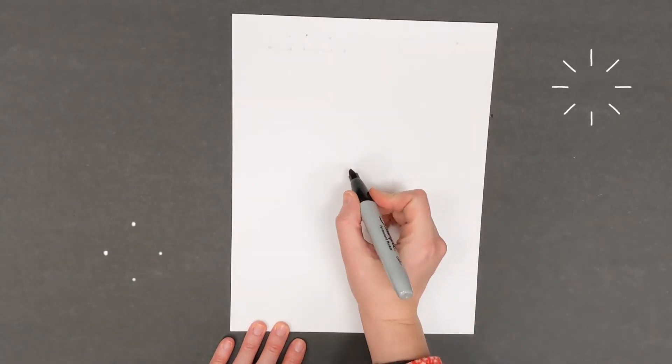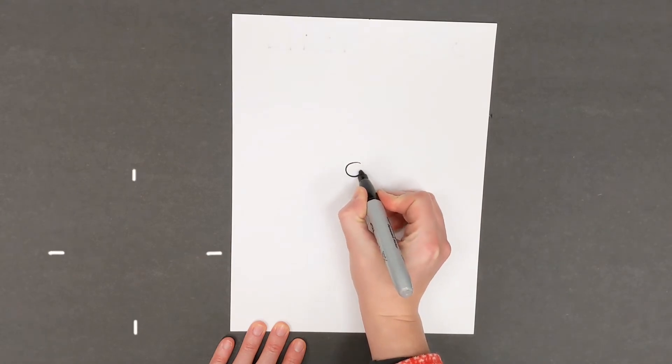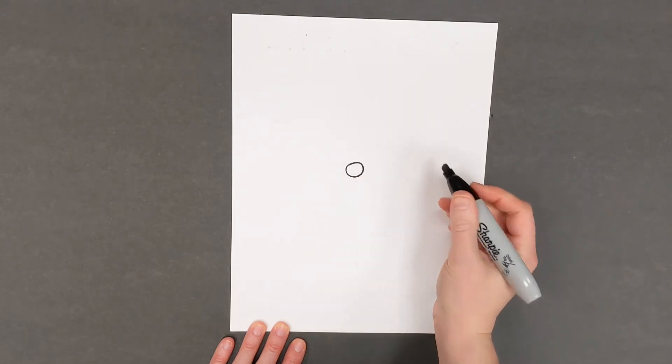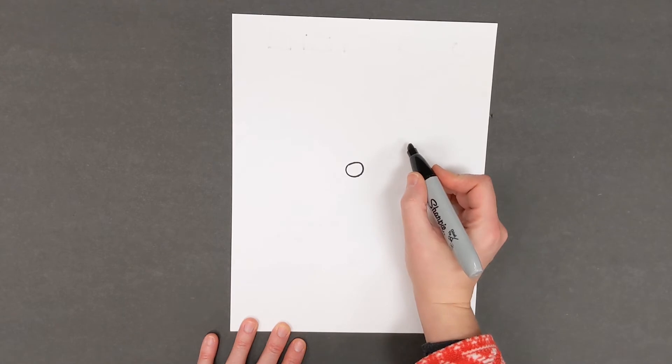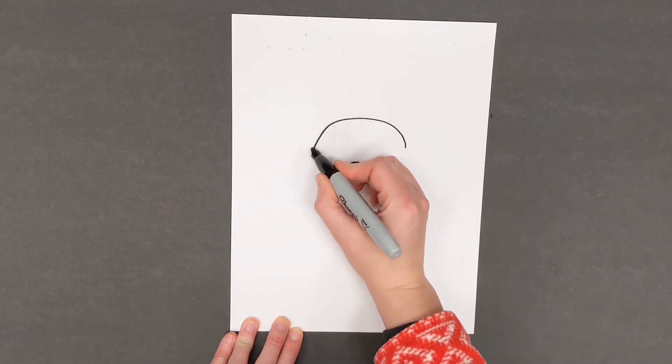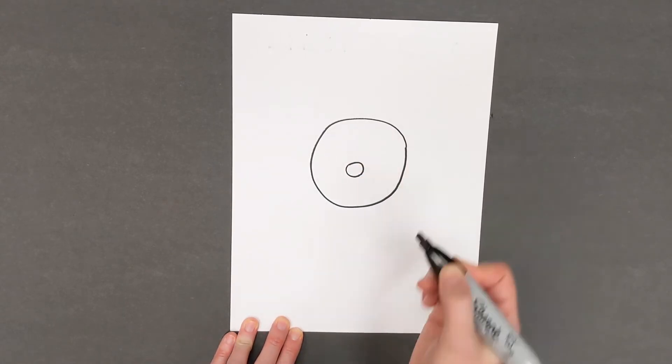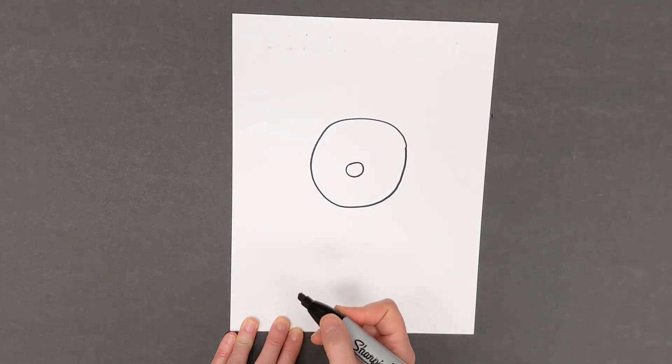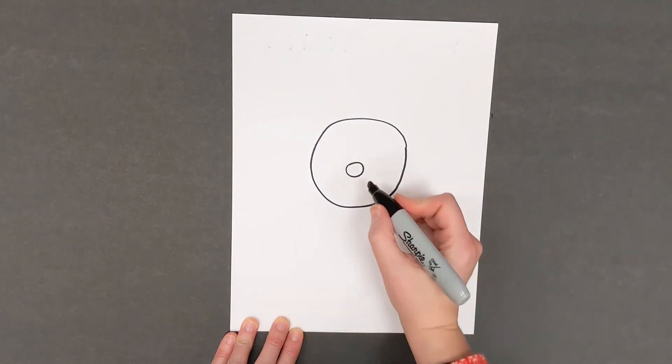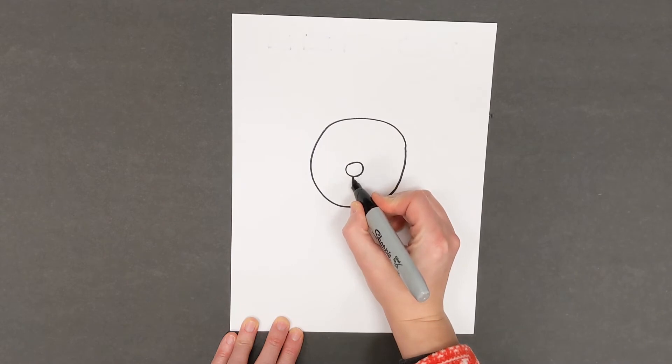First I want you to draw a small circle in the middle of your paper and then I want you to draw a much larger circle around that small circle. Then going back to your smaller circle in the middle, draw a small line down.